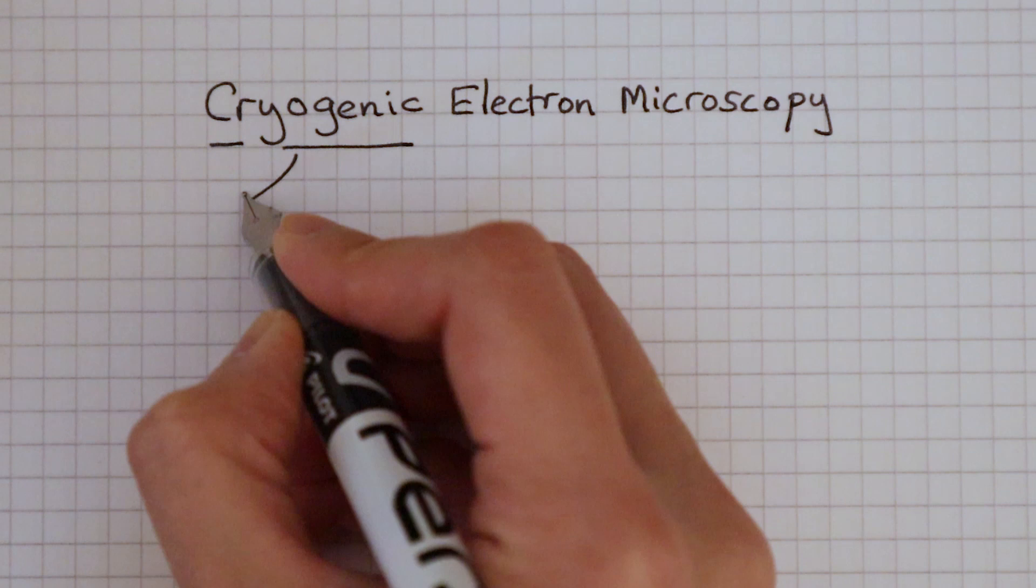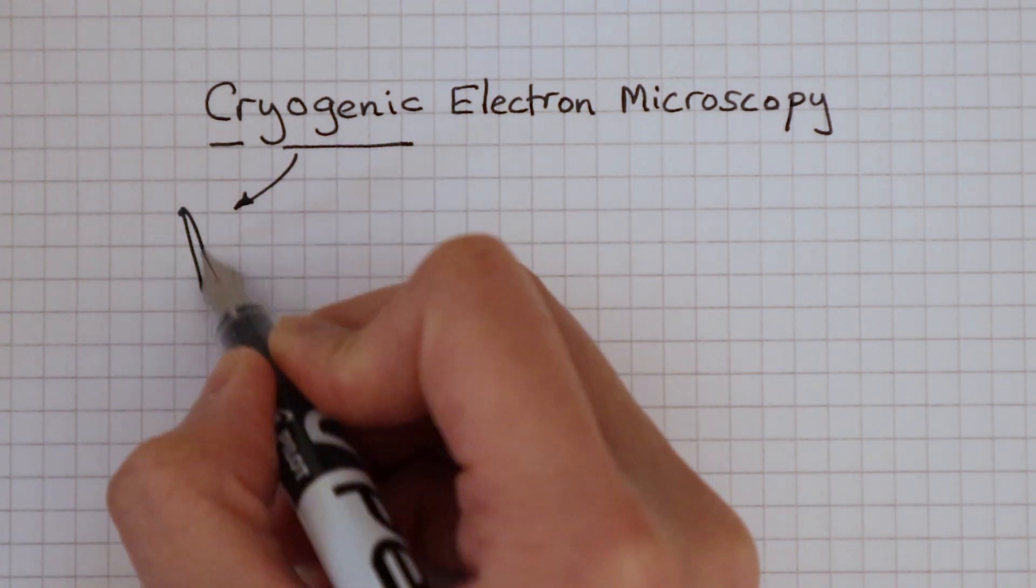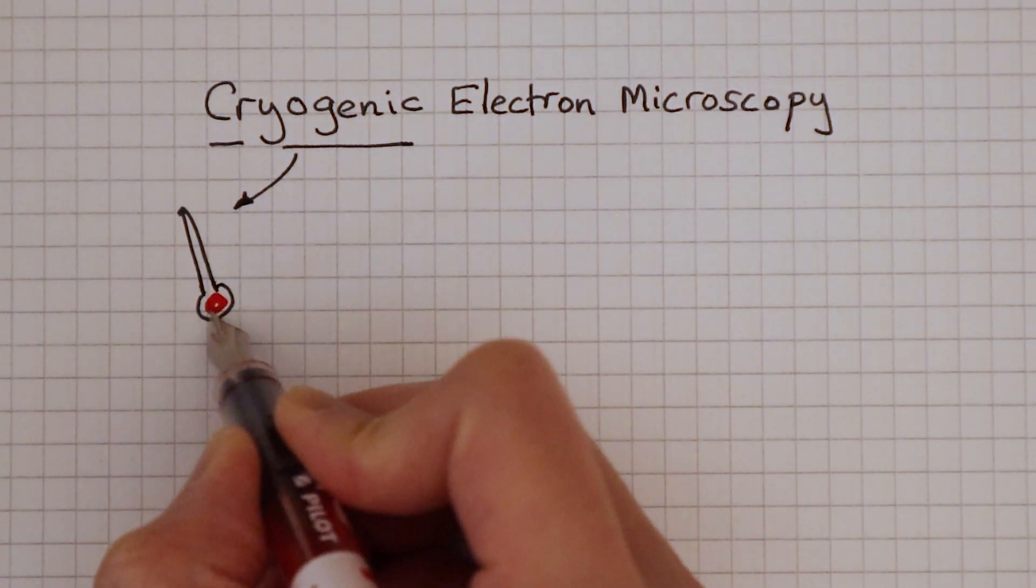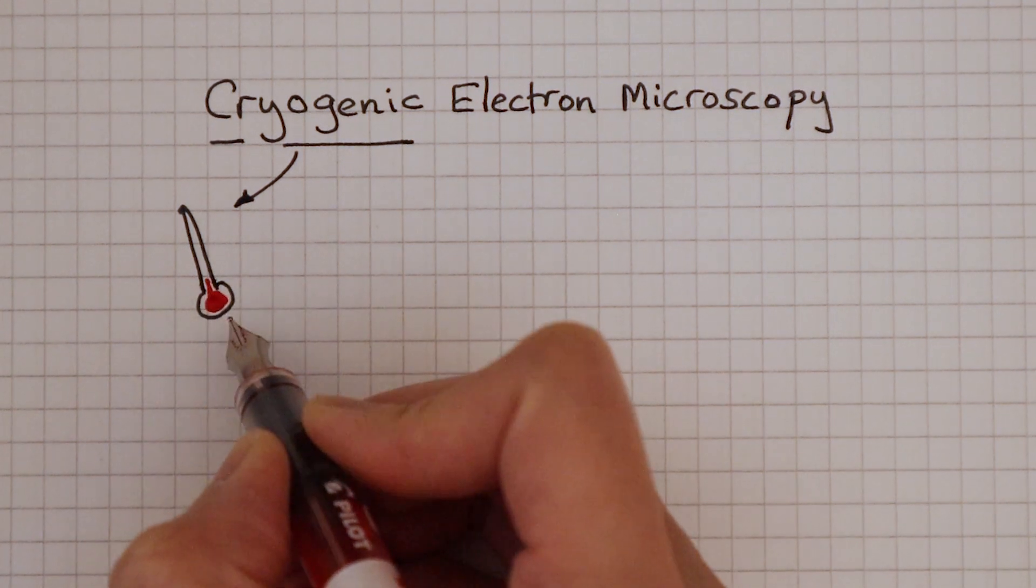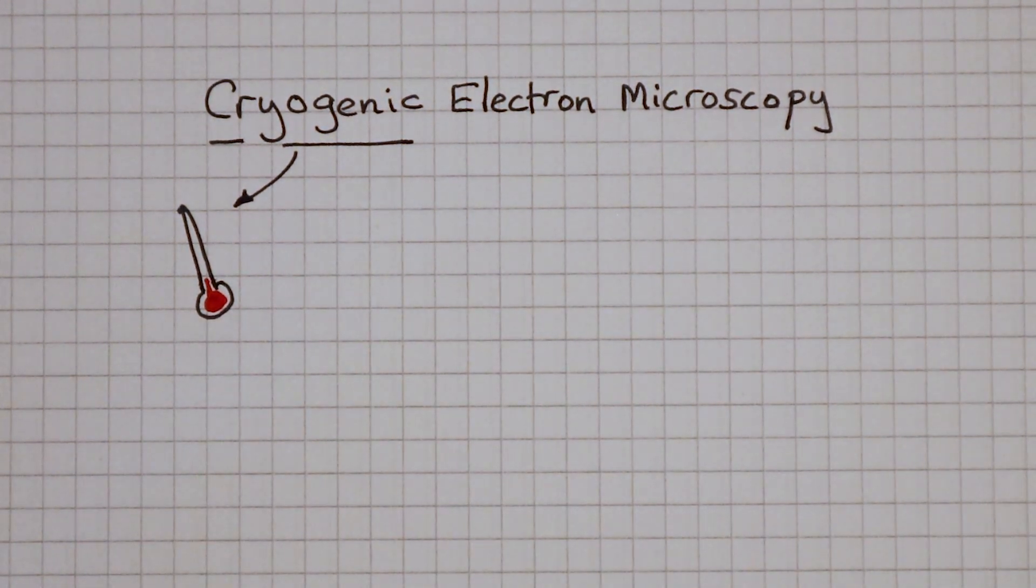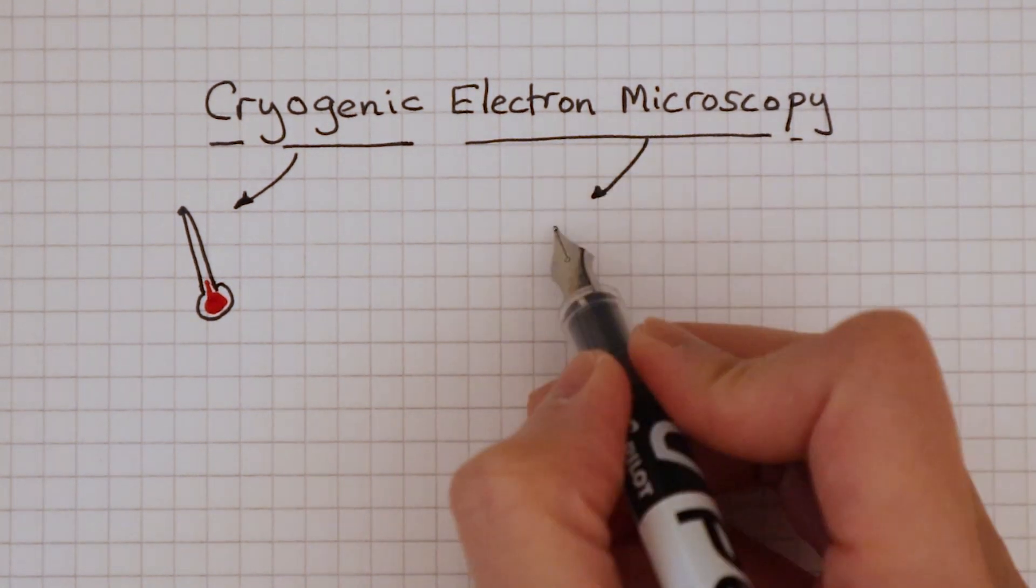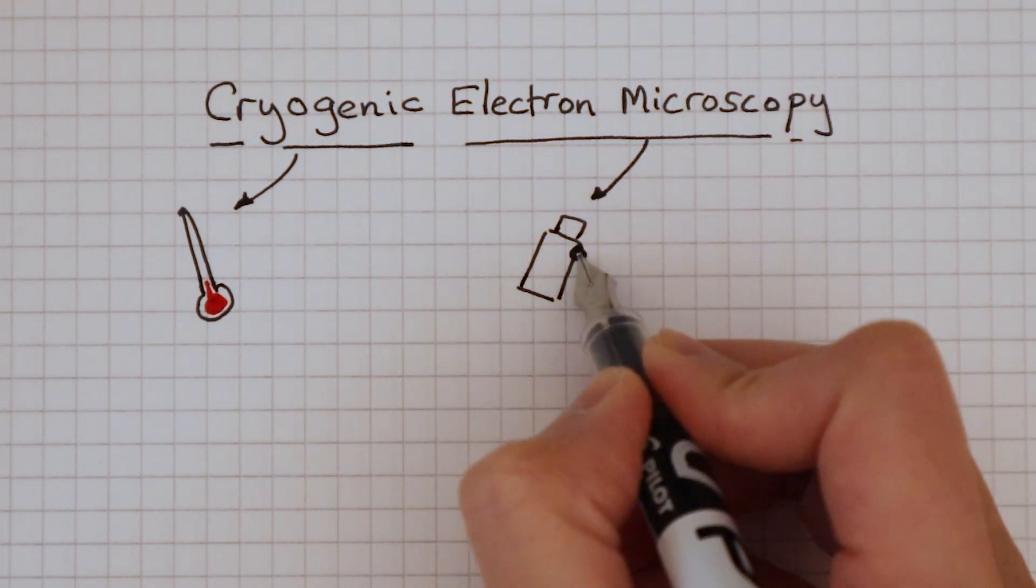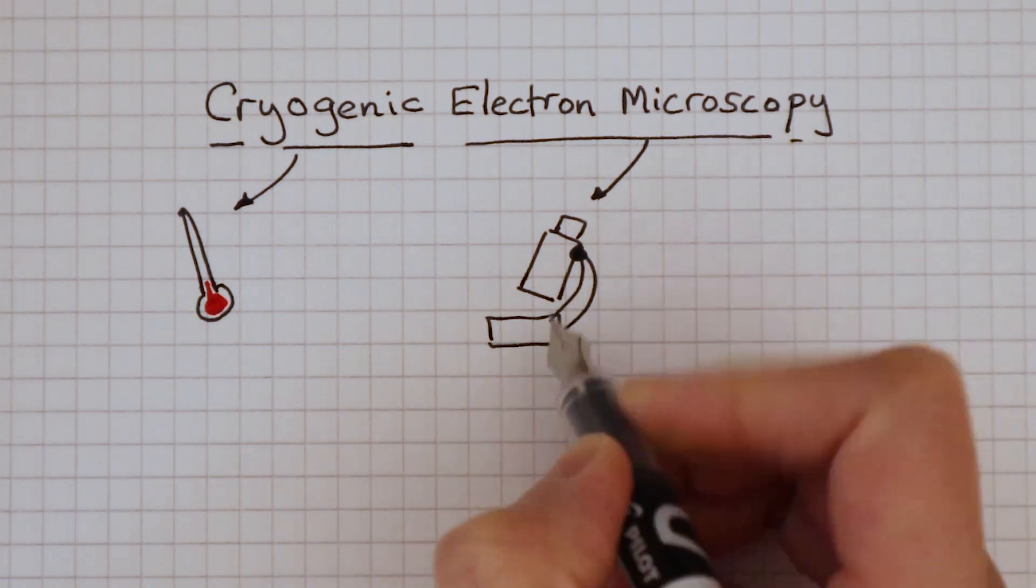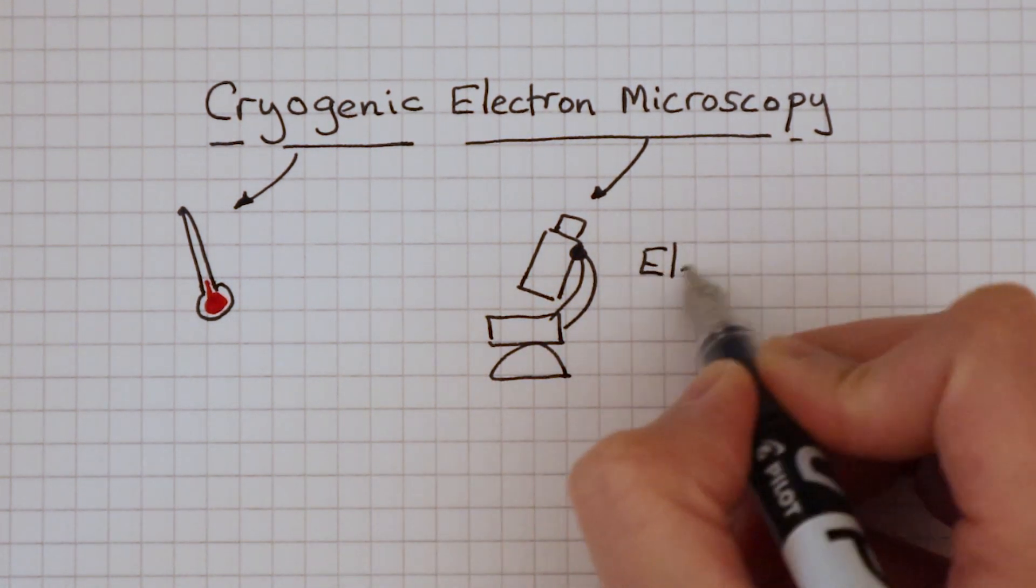In physics, cryogenics is the particular behavior of materials at a very low temperature, and usually we can achieve this low temperature using liquid nitrogen. An electron microscope uses a beam of electrons instead of light rays, unlike the traditional optical microscopes that you may have used at school.